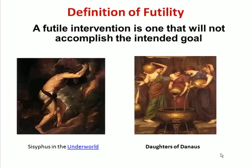We have examples from Greek mythology. On your left, Sisyphus in the underworld was punished by the gods — his punishment was to roll a heavy boulder to the top of a mountain, after which the boulder would roll down, and his job was to keep pushing it up until it stayed in place. That was never going to happen, so this would be considered a futile activity.